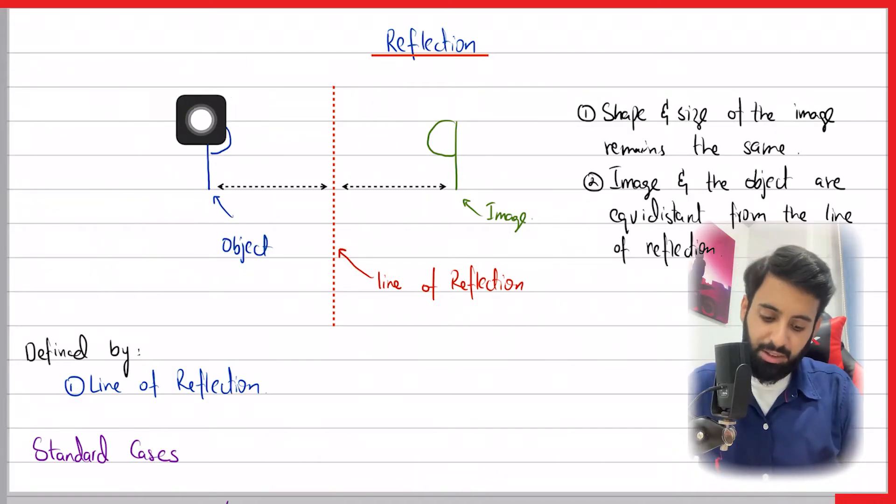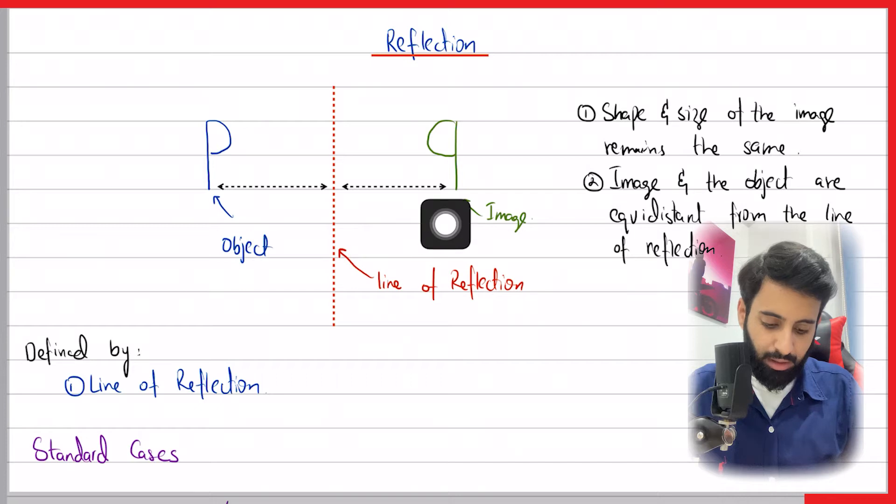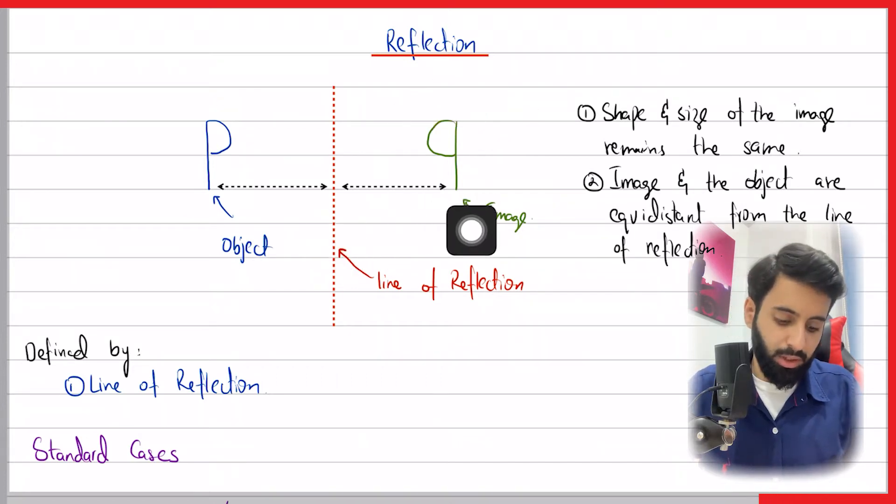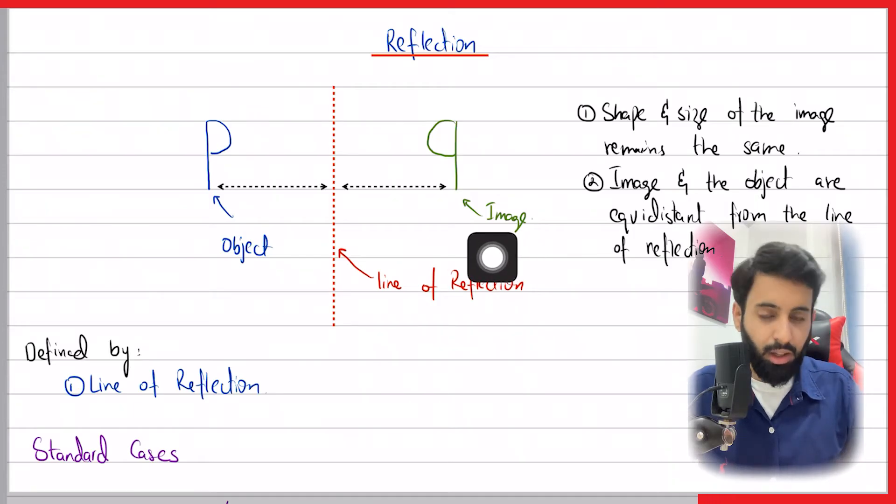This is what the object looks like in front of a mirror, and when the mirror reflects it, this is what it looks like. This is what you see in the mirror, this is the image. It's inverted.